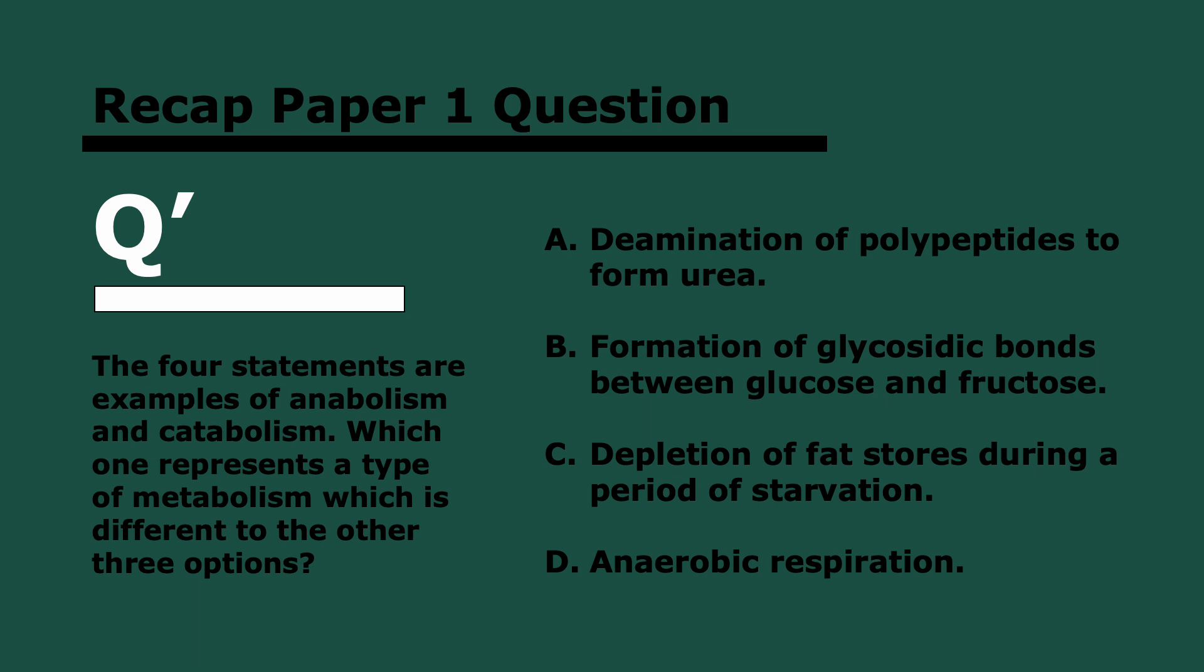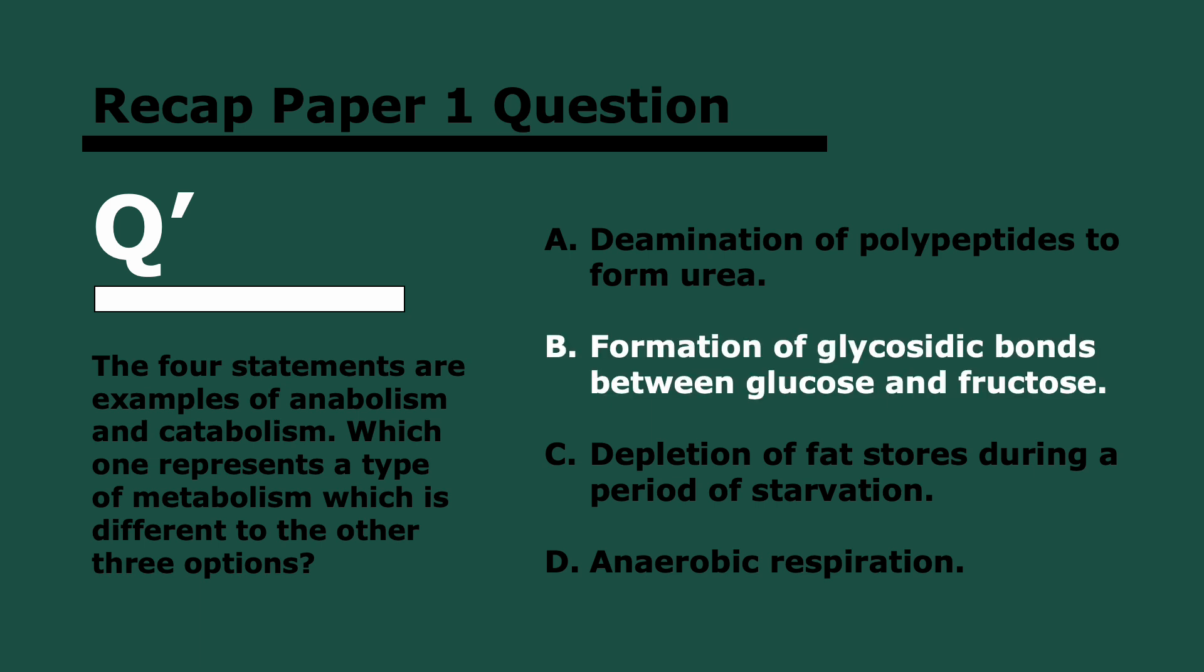The four statements are examples of anabolism and catabolism. Which one represents the type of metabolism which is different to the other three options. Three, two, and one. The answer is B. Why? B is the only anabolic reaction here. So when you're forming glycosidic bonds, you're building up a bigger molecule than what glucose and fructose was. Whereas all of the rest are catabolic. So deamination implies taking away, depletion of fat storages, same thing. You're cutting fats into smaller pieces and anaerobic respiration, same thing. You're basically trimming glucoses down.